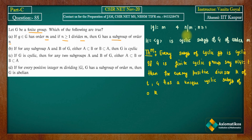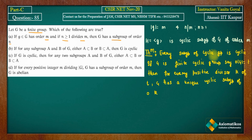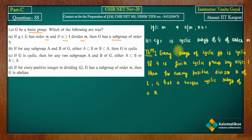H is a cyclic group of order m. Since n is a positive divisor of m, by this theorem we can say H has a cyclic subgroup of order n.